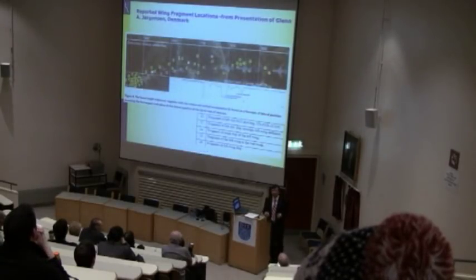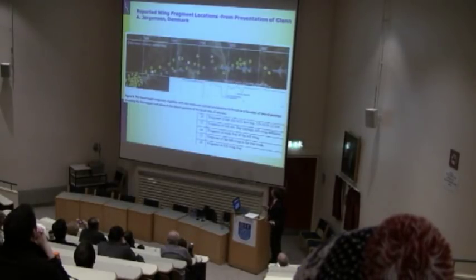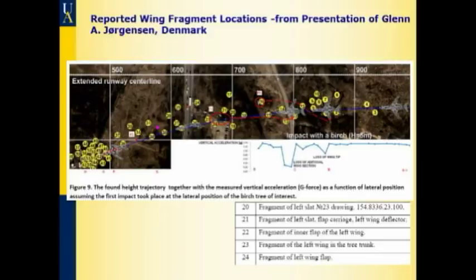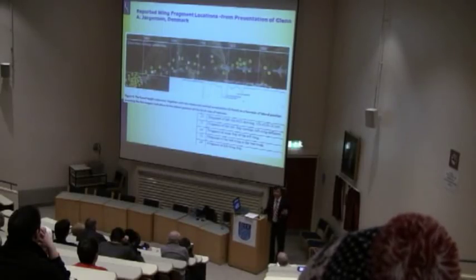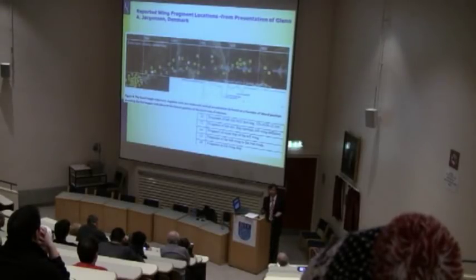We have been looking into this for many years, and not only us. Recently, Danish expert Glenn Jorgensen made calculations, and his lecture from January is on YouTube. He had the same motivation as I had — we both wanted to verify that the original report was correct. But when we each put in our time, we both found that the report makes no sense whatsoever.